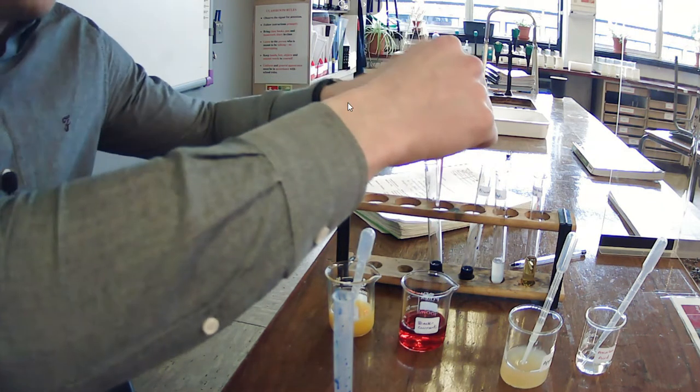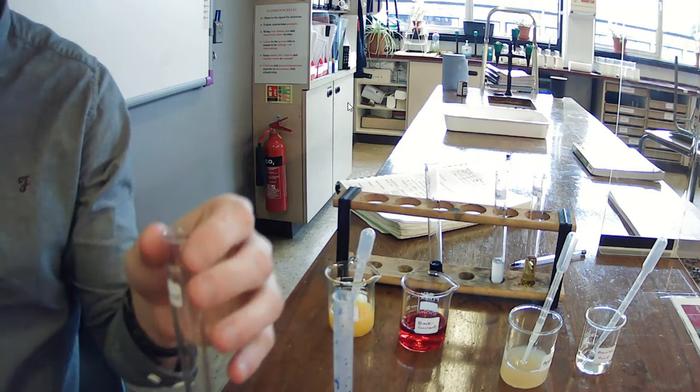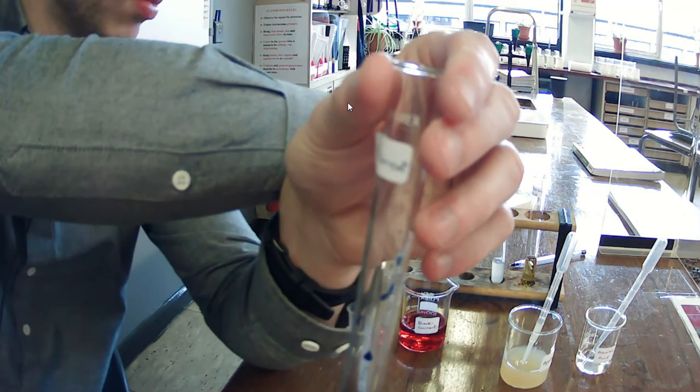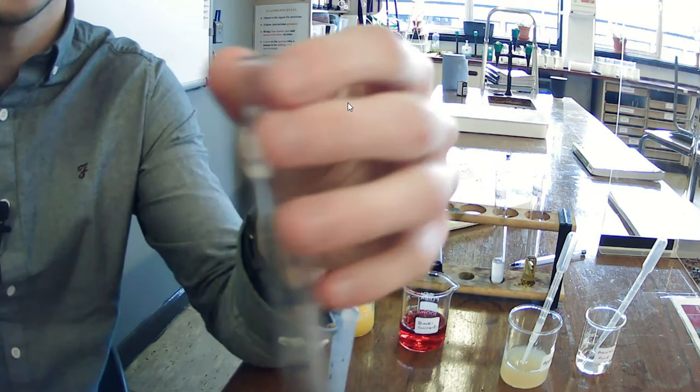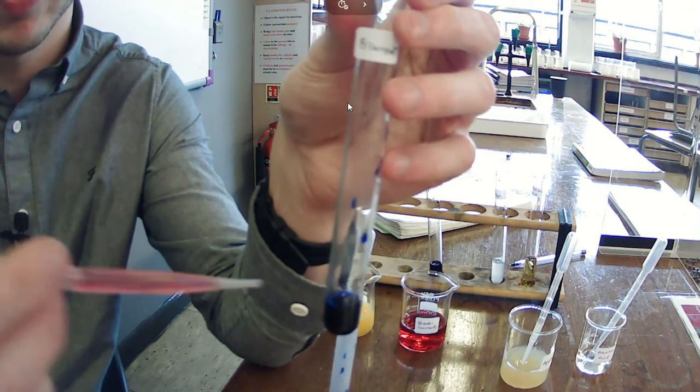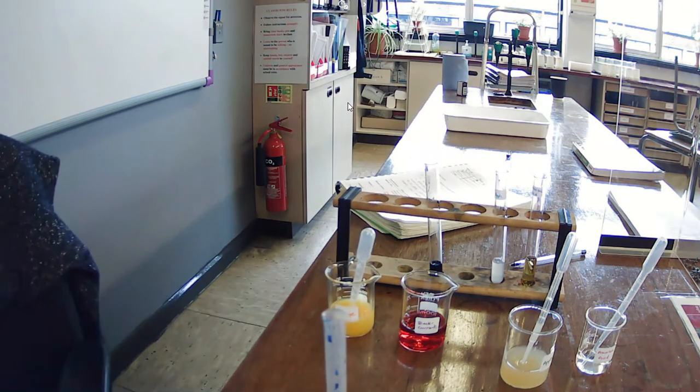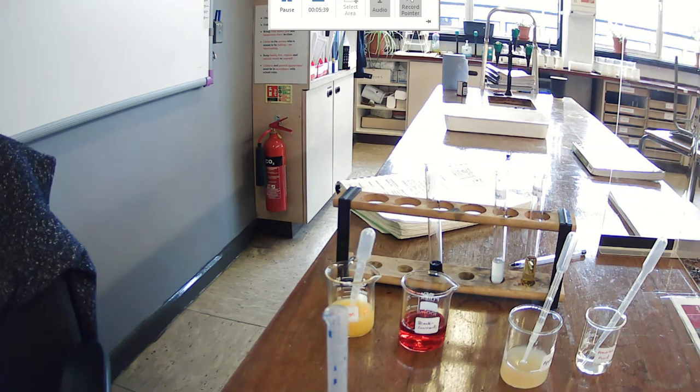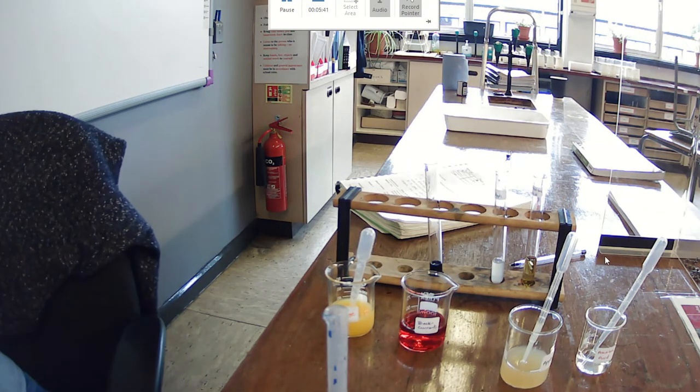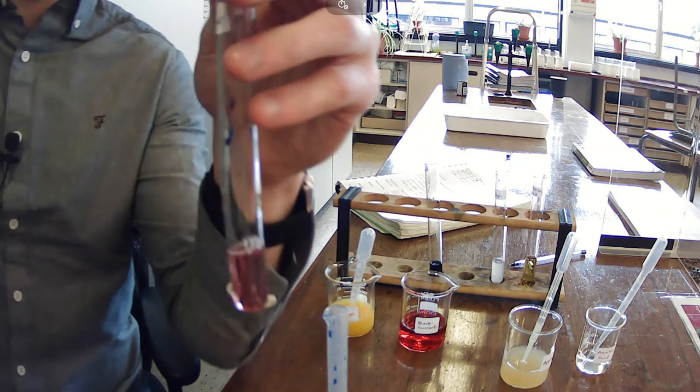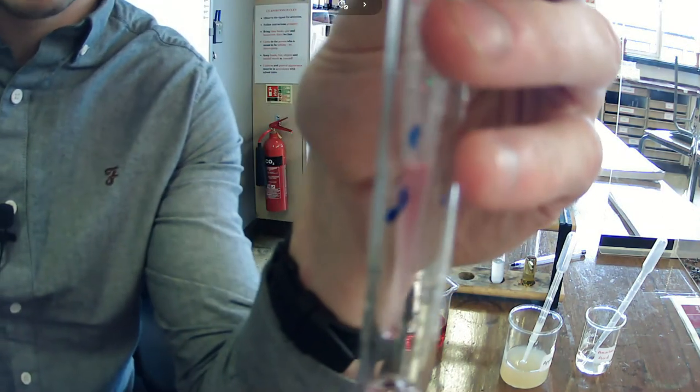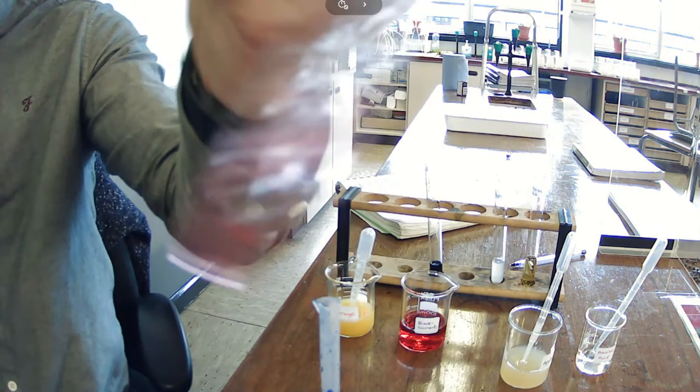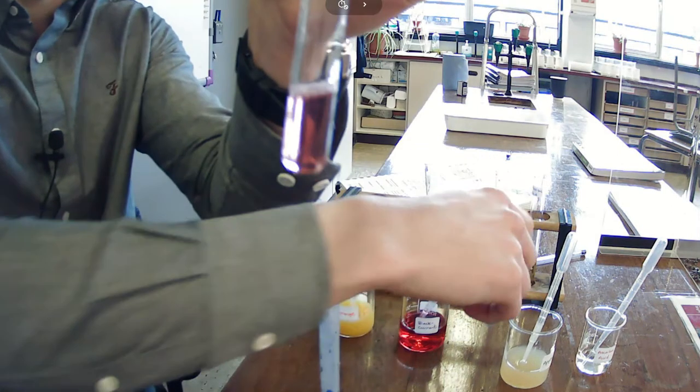So the next one we're going to try now is blackcurrant juice. And before we see the result, you may want to pause the video and think which has more vitamin C in it, apple juice or blackcurrant juice. Okay, so we're at 29, and maybe one more, 30. After 30 drops, so maybe to your surprise, actually after 30 drops, blackcurrant has turned to the color of the juice.